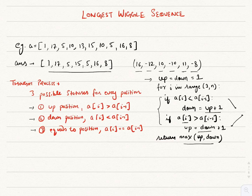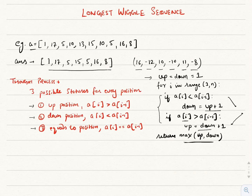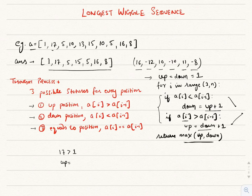At the end we'll return the max of up and down. Now let's see how this code works for the given sequence. The first element a[1] is 17. Since 17 is greater than 1, we have moved to the up position. We'll make up equal to down plus one. Down was initialized to one, so up becomes 2.